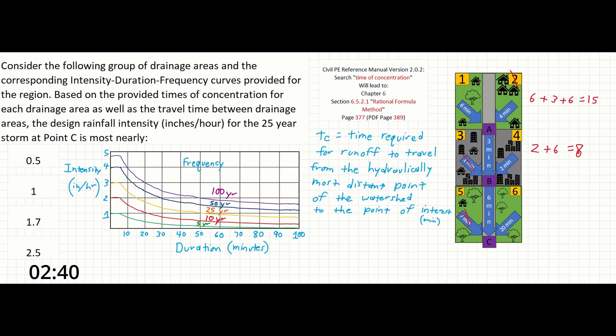So we can see that although drainage area 6 is the closest physical distance to point C, it actually has the longest time of concentration, or as our definition explains it, is the hydraulically most distant point.